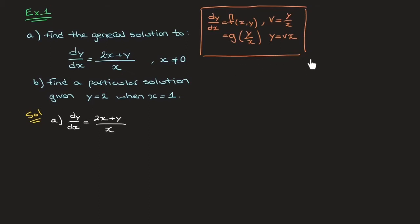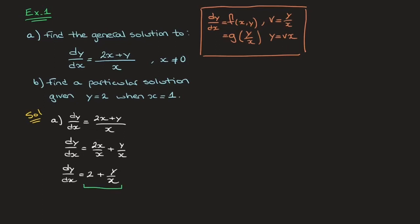Keeping in mind what we just saw and looking at the right hand side of this equation, it looks as though if we split the right hand side into two distinct fractions it may well be a homogenous differential equation. So we can write this as dy/dx equals 2x over x plus y over x. Simplifying that, we have dy/dx equals 2 plus y over x. Now looking at the right hand side, it's quite clear that we can think of this as a function of y over x.